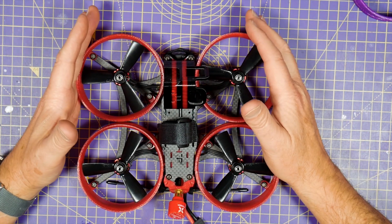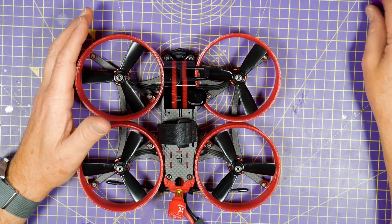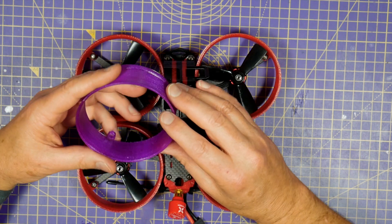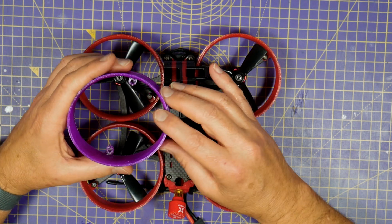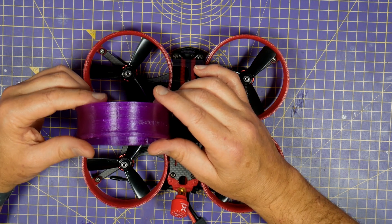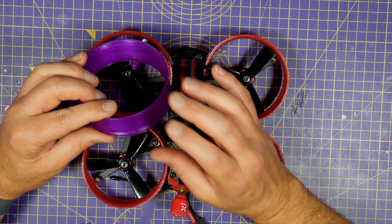If you're going to print them yourself print them at 100% infill and whatever the best settings for printing TPU on your printer are. Remember the duct walls are quite thin between 1 and 1.5mm. So adjust your settings accordingly.